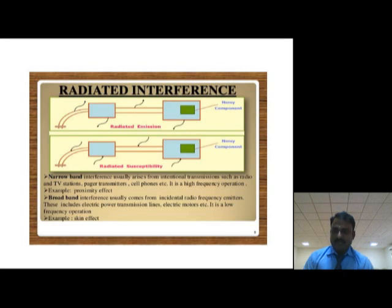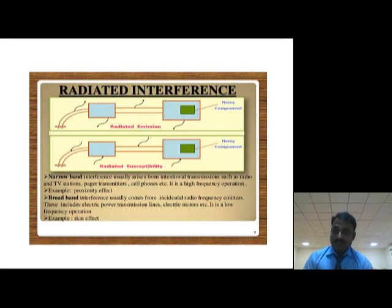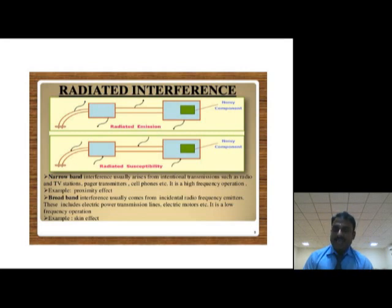The second type is radiated susceptibility. Susceptibility is nothing but how long your system will be able to withstand external radiation — that is the concept represented by figure 2. In this case, radiated interferences from the outside couple towards the noisy component, making the entire system collapse. The ability of the system to function satisfactorily in a disturbed environment is what defines radiated susceptibility — it is the withstanding capability of the system even though interferences are present.